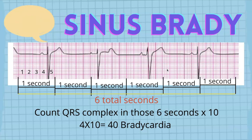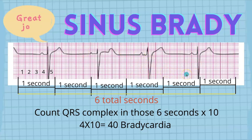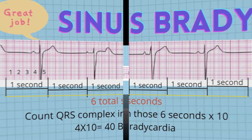In sinus brady, there's a P wave before each QRS complex. The P waves look alike. The PR interval is constant — it's regular. The QRS rate is less than 60 and the rhythm is regular. Where does this rhythm originate from? It's the SA node. The pacemaker is still the SA node.